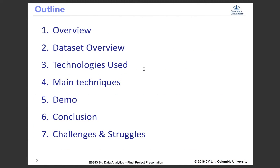Here's the outline of the project presentation. Firstly, we will get an overview of the whole project and the dataset. Then we briefly summarize the technologies we used and get into more details of the main technologies for analyzing data. Next is the project demo. Finally, we draw a conclusion and talk about the challenges and struggles we faced while doing our project.